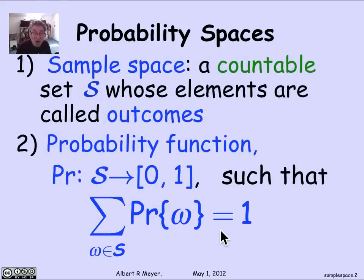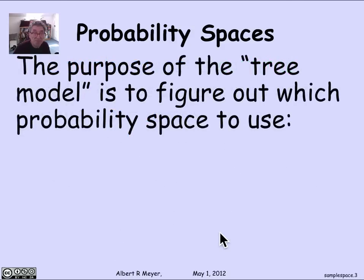That's the crucial condition that defines a probability function on a sample space. A sample space together with a probability function is called a probability space. The purpose of the tree model we were using is really to figure out which probability space to use, and the mathematics doesn't really start until you have the probability space.